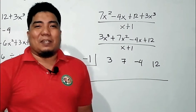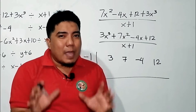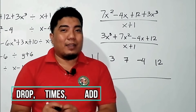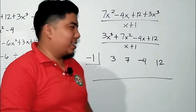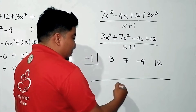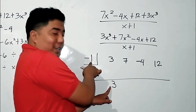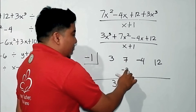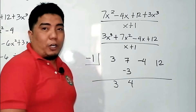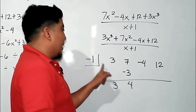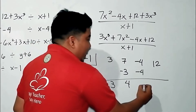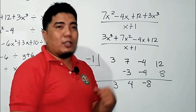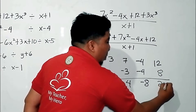The technique here is very simple — remember this: drop, times, add. First, you drop the first term. Then you multiply it by your divisor: 3 times negative 1 is negative 3. Then you add: 7 plus negative 3 is positive 4. You repeat this same operation. Drop, times — that is negative 4 — then add, that is negative 8. Drop, multiply — that is positive 8 — then add: 12 plus 8 is 20.